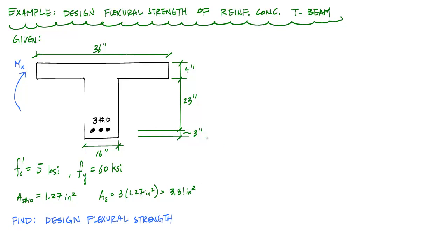From the given information, I know that the width of the flange is 36 inches. The width of the web, BW, is 16 inches. And the depth to steel from the extreme compression fiber to the center of the steel is 27 inches. My approach to this problem is going to be the same as if I were analyzing any cross-section for the nominal moment strength and the design flexural strength, and it's going to involve the following steps.